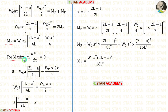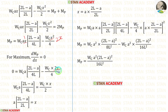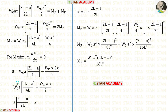For MB to be maximum, we have to differentiate MB with respect to X and equate that to zero. When we differentiate X, it will be 1. When we differentiate X squared, it will be 2X. 2 twos are 4. We can take this term on the other side — it will be positive. We can eliminate WC. 2 twos are 4. Finally, for X, we are getting A into (2L minus A) upon 2L. This is the position of the third plastic hinge.